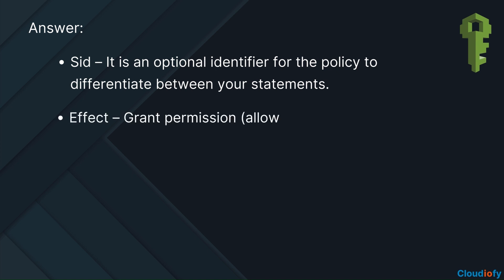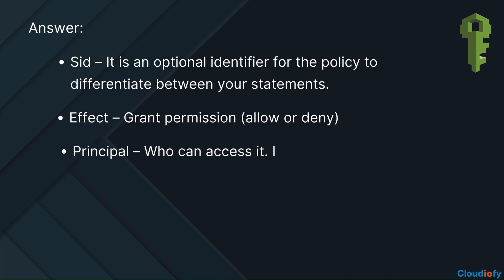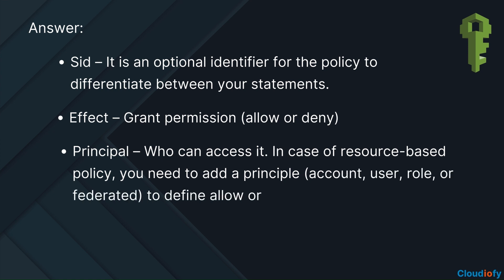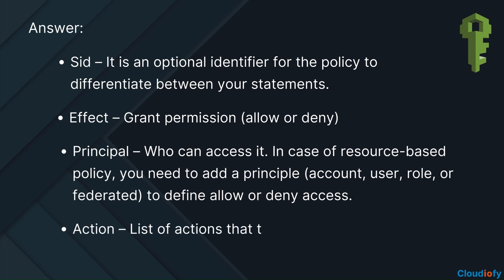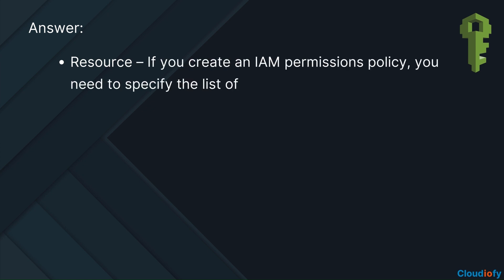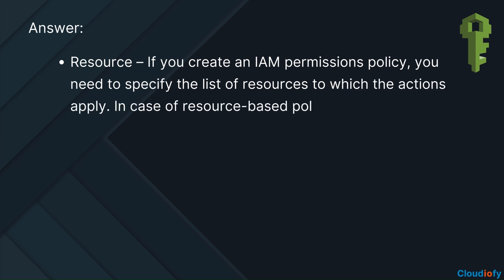Effect — grant permission: allow or deny. Principal — who can access it; in case of a resource-based policy, you need to add a principal (account, user, role, or federated) to define allow or deny access. Action — list of actions that the policy allows or denies. Resource — if you create an IAM permissions policy, you need to specify the list of resources to which the actions apply; in case of a resource-based policy, this element is optional.